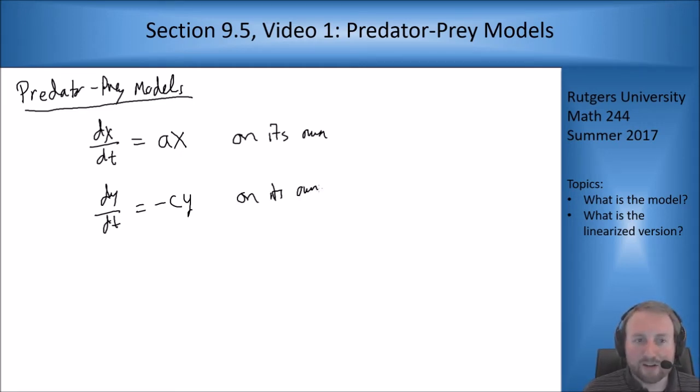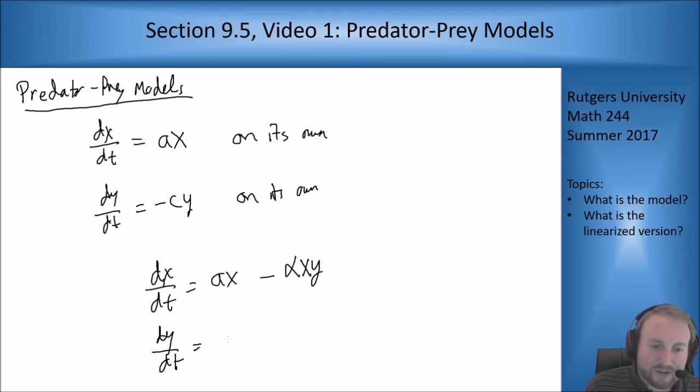And then we want to look at the interaction terms. The interaction terms are proportional to the product and we're going to get that it negatively affects the prey and positively affects the predators. So our final system model turns out to be dx/dt equals ax for the normal growth rate minus alpha xy because that product gives us how many times they interact with each other and alpha is the conversion rate from interactions to dead prey. Then dy/dt equals negative cy plus gamma xy where gamma is the conversion rate from interactions to new predator organisms.